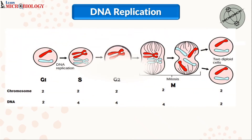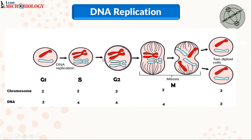Consider this cell which has a pair of chromosomes — two chromosomes, with one DNA per chromosome. When the cell moves from G1 phase to S phase, DNA replication takes place and each DNA in the chromosome is replicated, giving 2 DNA per chromosome. Hence for 2 chromosomes we have 4 DNA. During the G2 phase, the cell grows and gets ready for the M phase; the number of chromosomes is 2 while the number of DNA is 4.